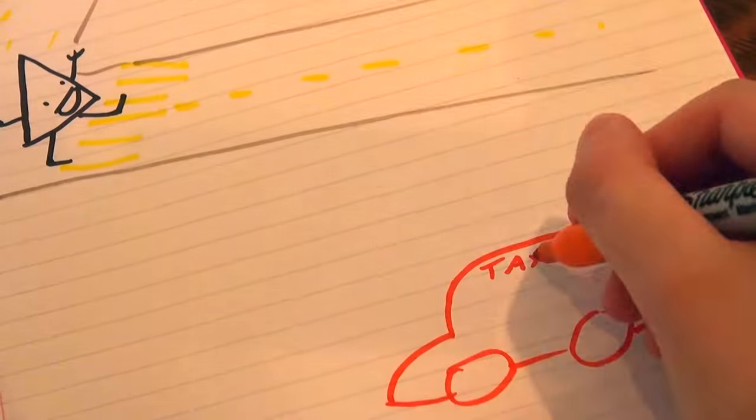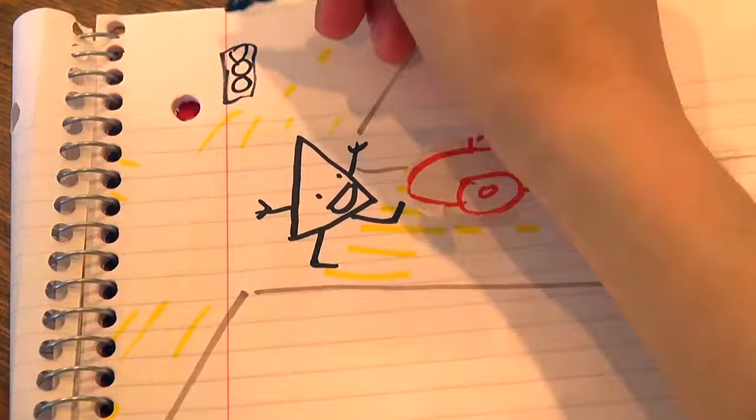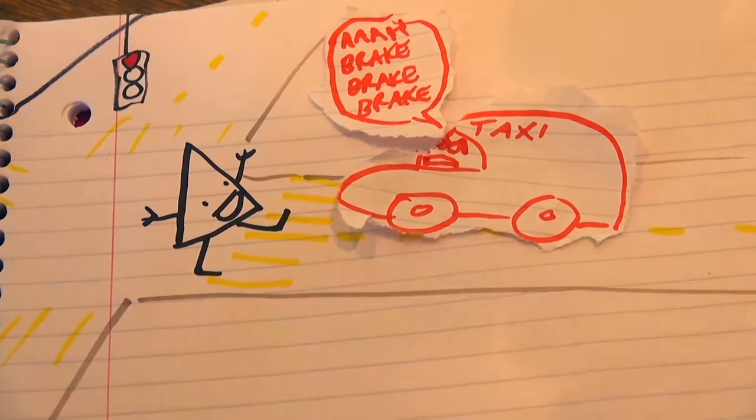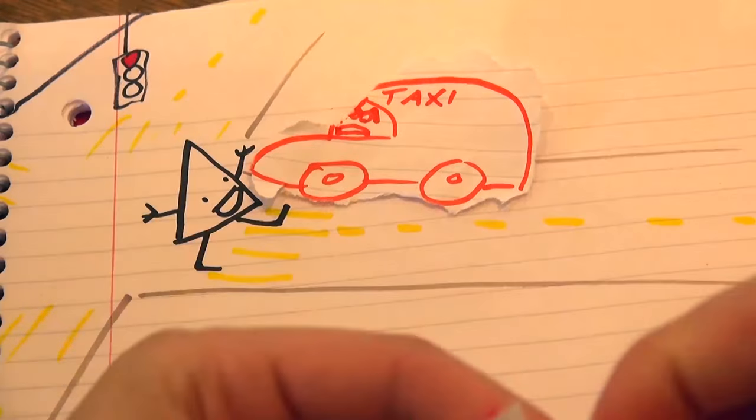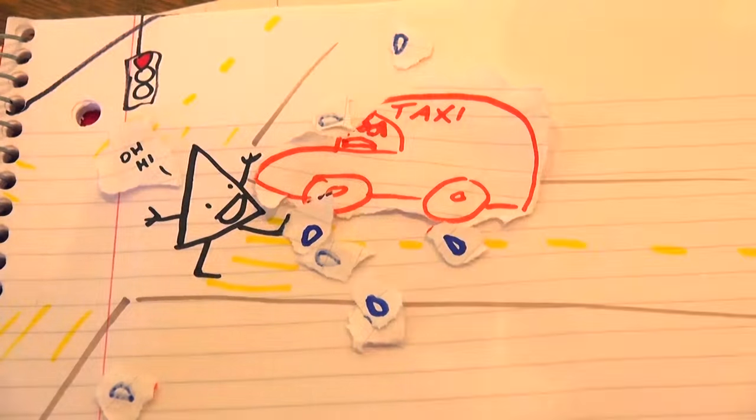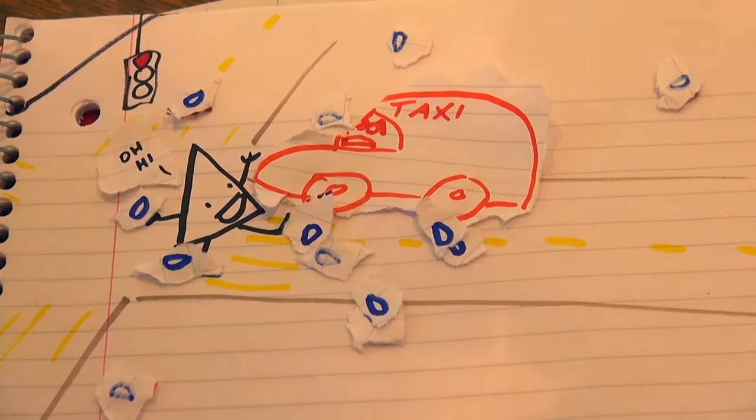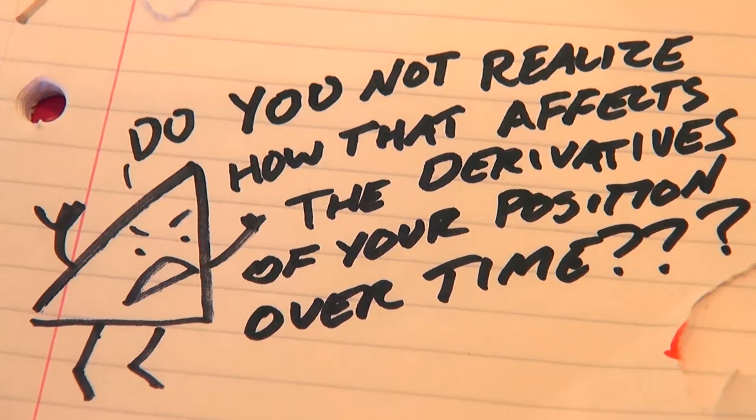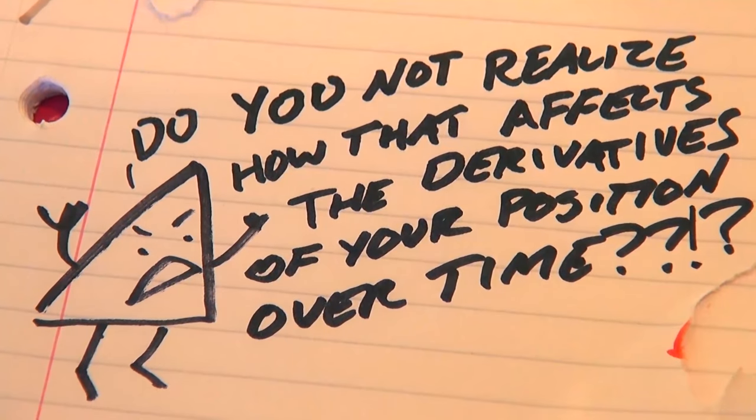Today I was walking across the street and this taxi comes zooming up to the crosswalk at a red light and slams on the brakes and skids across the crosswalk a foot in front of me. And I'm like, dude, it's raining. Do you not realize how that affects the derivatives of your position over time? My goodness, I was one foot away from being turned into a pancake by your bad math education.